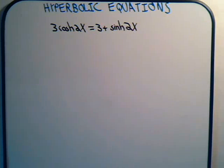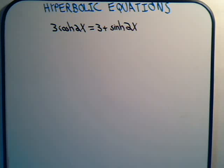We're going to work a little bit with hyperbolic equations. Here we have 3 times the hyperbolic cosine of 2x equals 3 plus the hyperbolic sine of 2x, and we're supposed to solve for x — what value of x will make that equation true?